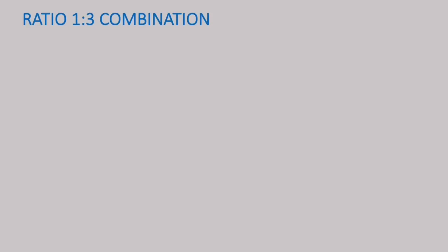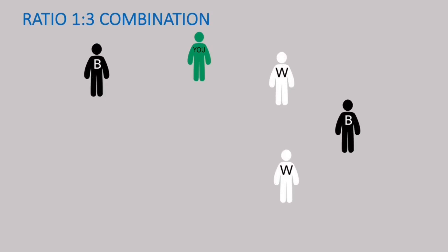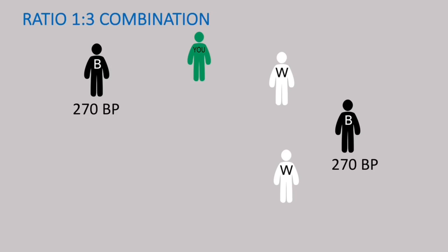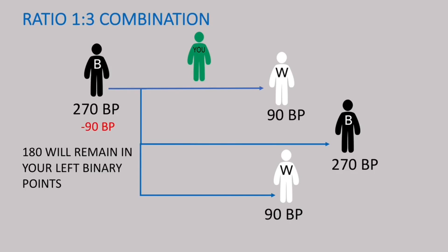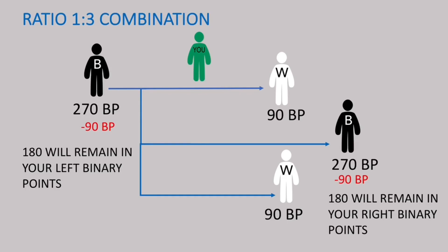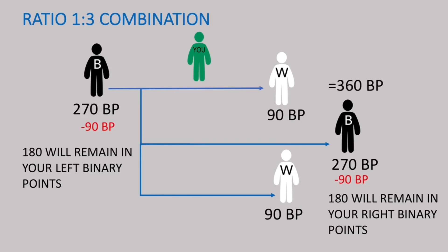Now the 1 to 3 combination package. This is you — you invite one black package on your left and two white packages plus another black package on your right. Each black package gets 270 binary points and each white package gets 90 binary points. To balance the 1 to 3 binary points, we deduct 90 points from 270, leaving 180 binary points on the left, and similarly 180 binary points remain on the right. The total is 360 binary points, or 36 euros.